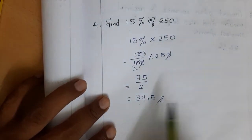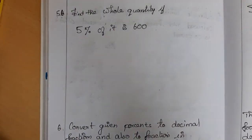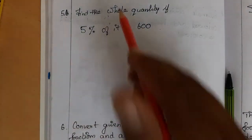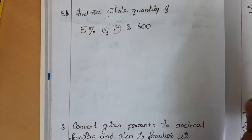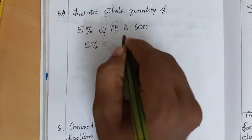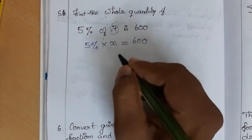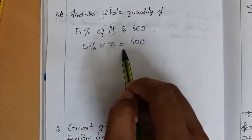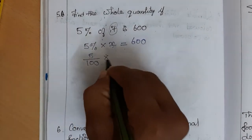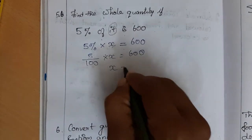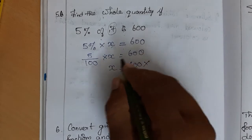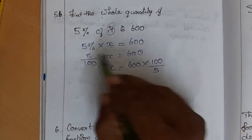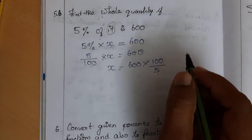Next problem: find the whole quantity if 5 percent of it is 600. We let the unknown whole quantity be x. 5 percent of x equals 600, which means 5/100 into x equals 600. To find x, we take 5/100 to the other side — numerator and denominator interchange — so x equals 600 into 100/5.